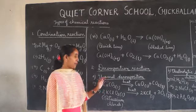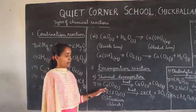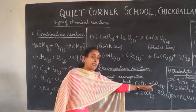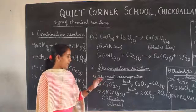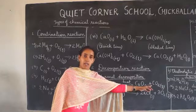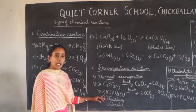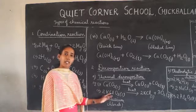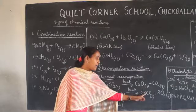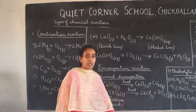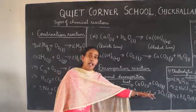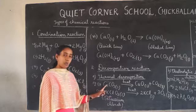For example, the first one: calcium carbonate decomposes on heating to form calcium oxide plus carbon dioxide — it splits up into calcium oxide and carbon dioxide. Next, potassium chlorate decomposes on heating to form potassium chloride and oxygen. So in both cases, a single reactant decomposes to form more than one product.